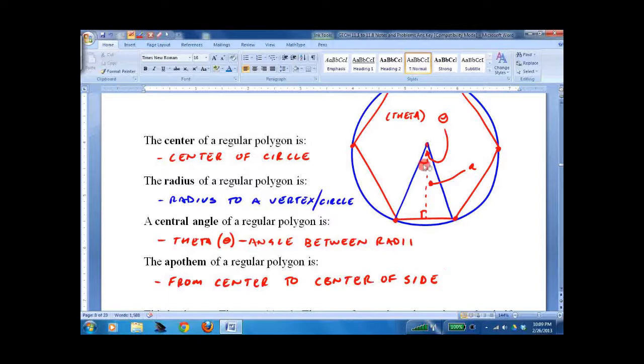This angle will be theta over 2. And this will be the radius. And this will be the side. And this will be the side over 2. And I bring that up because we have a triangle and we know how to find the area of that triangle.